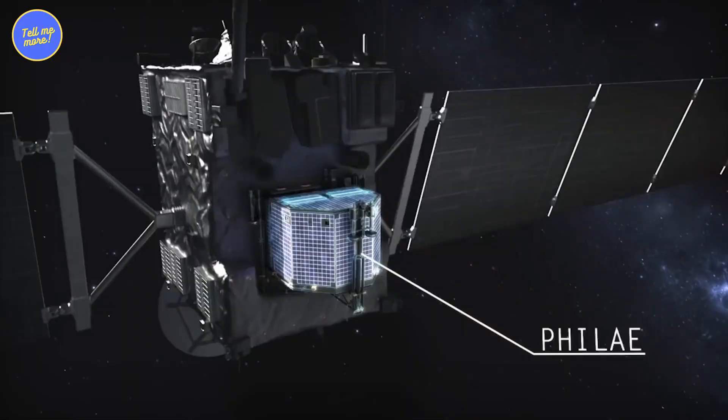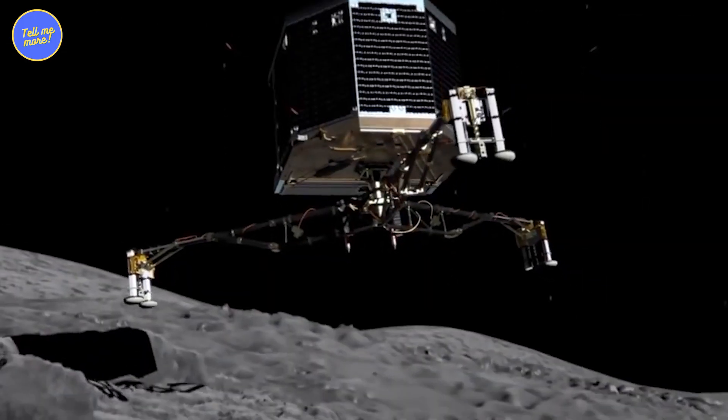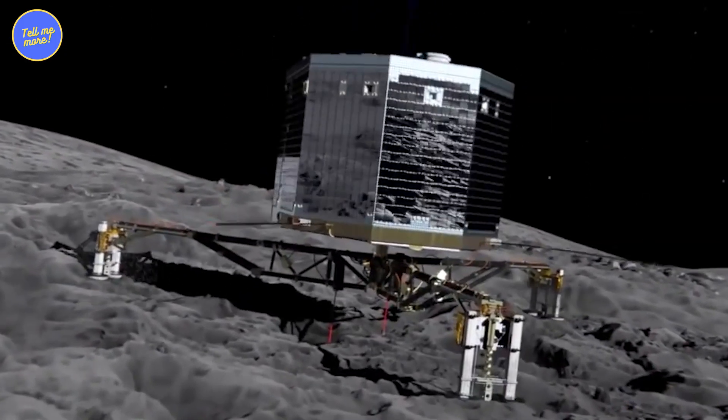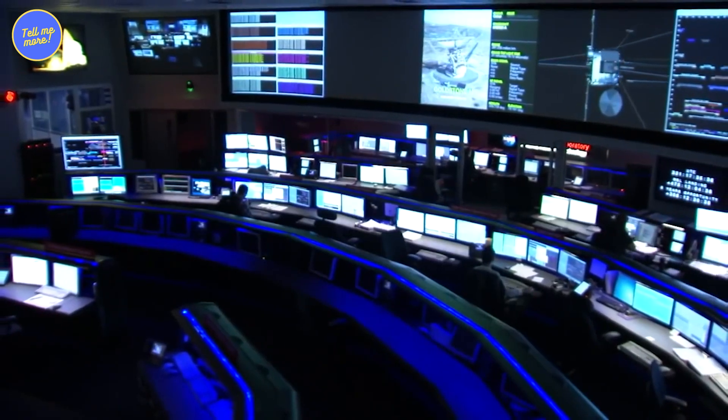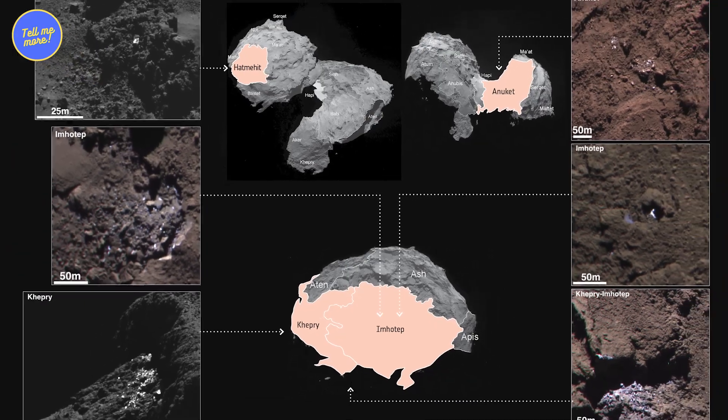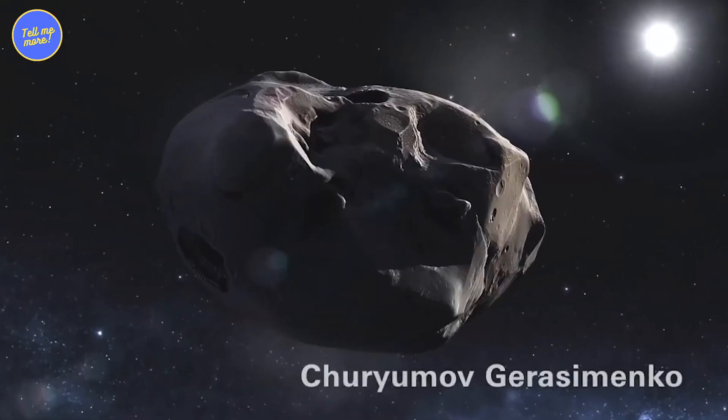Rosetta even sent a little lander, Philae, to touch down on the rubber ducky's surface. It was like a space rendezvous made in the stars, and the data Philae collected gave us a sneak peek into the comet's icy heart. Who knew comets could be this cute and puzzling?